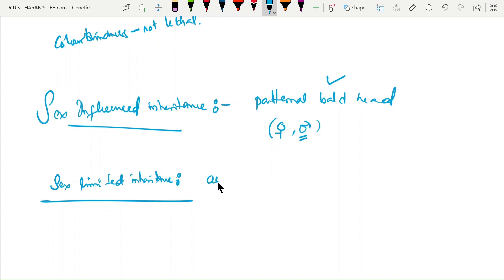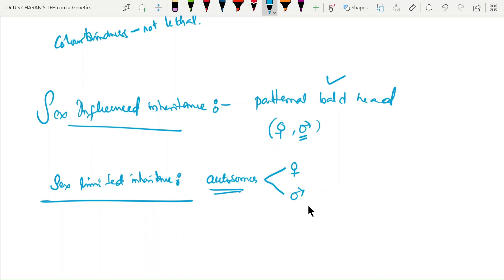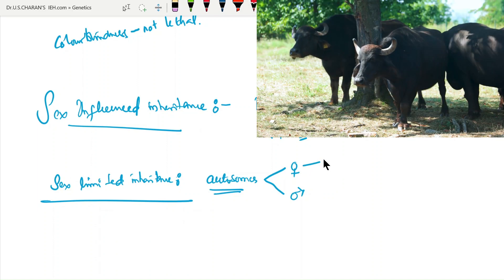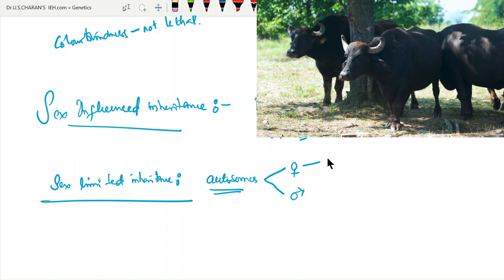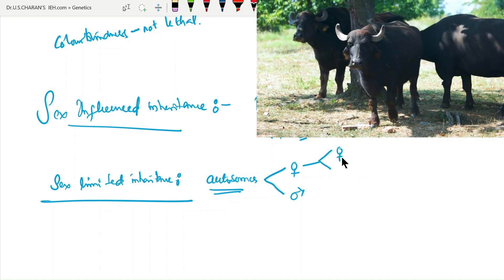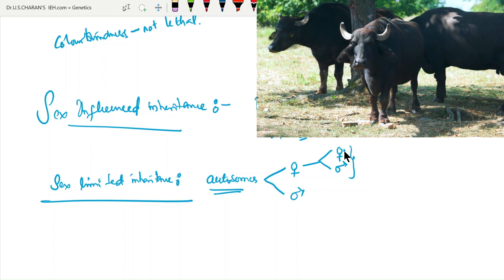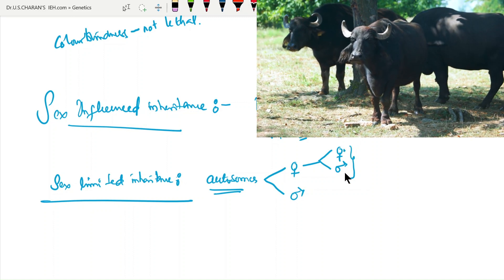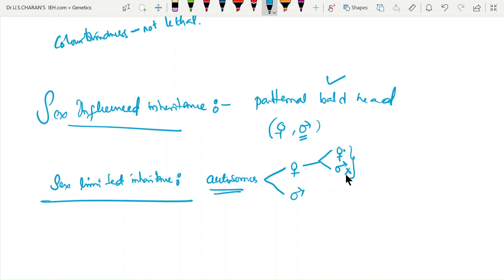In sex-limited inheritance, autosomal genes are given to both male and female offspring, but are expressed in only one sex because special hormones present in that sex cause their expression. For example, genes for milk production in cattle are present in both bulls and cows via autosomes, but are expressed only in females due to the presence of female sexual hormones, which are absent in males.